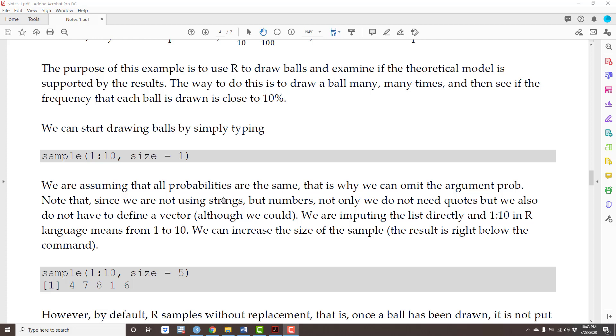Also, we are not using strings. We are not drawing heads or tails. We are actually drawing numbers. If we are drawing numbers, we do not need to use quotes because quotes are used to tell R that you are talking about names or strings. We are not defining a vector, although we could. This notation already implies that this is a list from 1 to 10. So the command got much simpler.